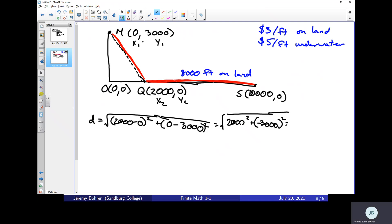Well, those are some fairly big numbers, but it's not a big problem. This is the same as 4,000,000 plus 9,000,000, which is 13,000,000.